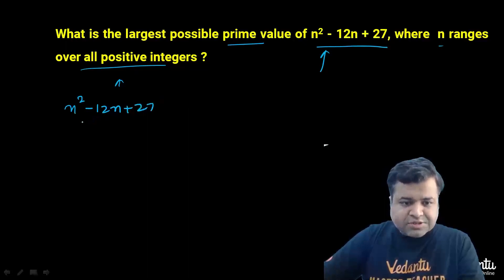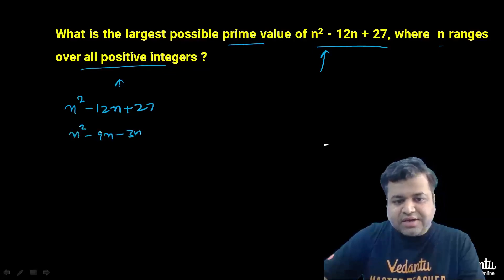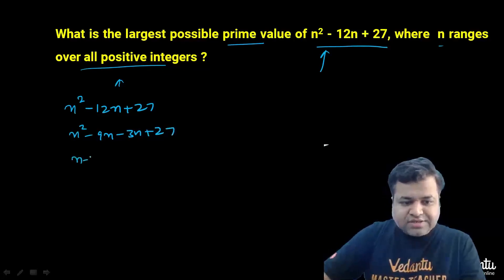Clearly we can split this term as n² - 9n - 3n + 27, and we will get the factors as (n - 3) times (n - 9). So this thing is actually equal to this thing.